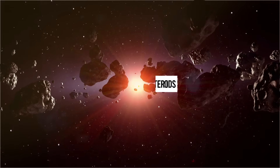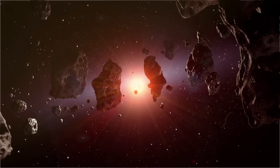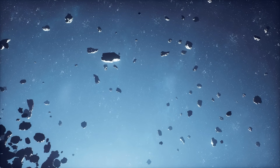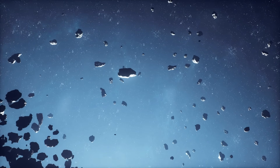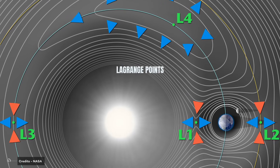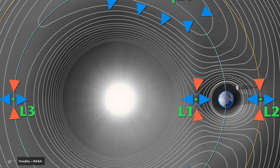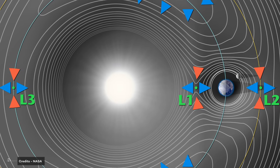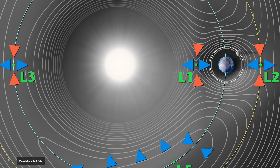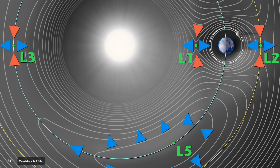Did you know that there are asteroids that share their orbit with other planets without colliding? They exist and are called Trojan asteroids. These asteroids are found in precisely the same orbit as another planet. This is due to something called Lagrange points — five particular positions in space where the gravitational forces of two celestial bodies, such as the Earth and the Moon or the Earth and the Sun, balance each other. At these points, a small object can maintain a relatively stable position concerning the two bodies, creating a rest point in the system.